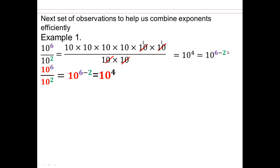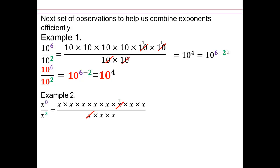Let's do a few more to make sure that that really is what's happening. Consider x to the 8th divided by x to the 3rd — x divides into x, and you're left with x to the 5, or 8 minus 3. It's very, very important you pay attention here. The same base with an exponent divided by the same base with an exponent, and equivalent fractions allow us to simplify.